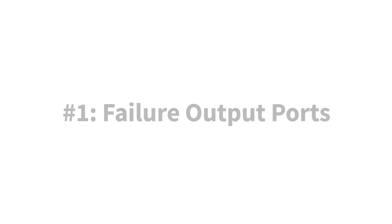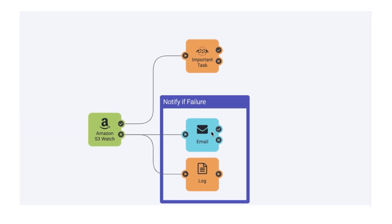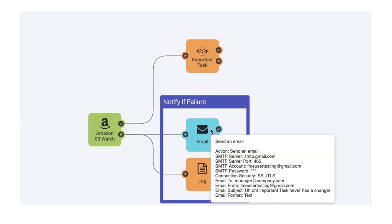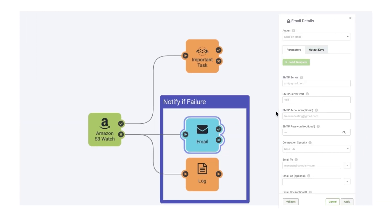Number one: FME Server Automations now provides failure output ports on each trigger. This allows you to determine how your automation workflow will run if a trigger fails, so that action can be taken automatically.